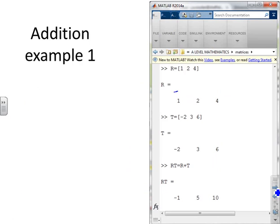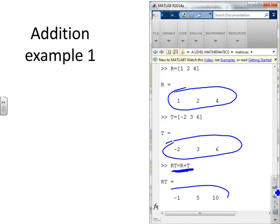Here's an example. I've defined R as a row vector 1, 2, 4. T as a row vector minus 2, 3, 6. And so then if I just write R plus T, it does the addition for me.